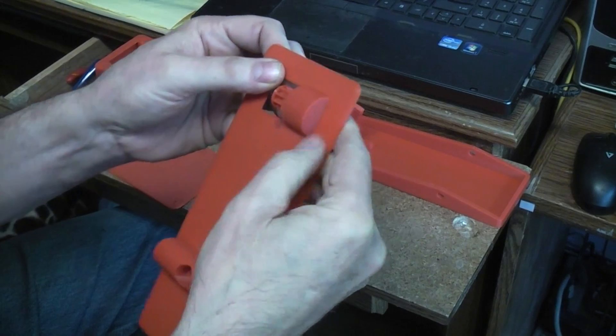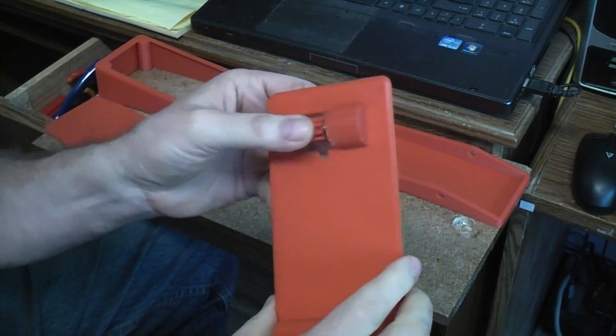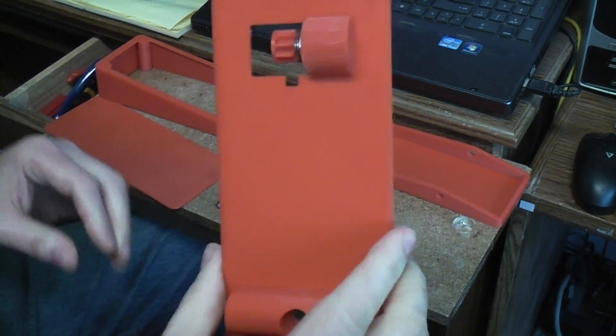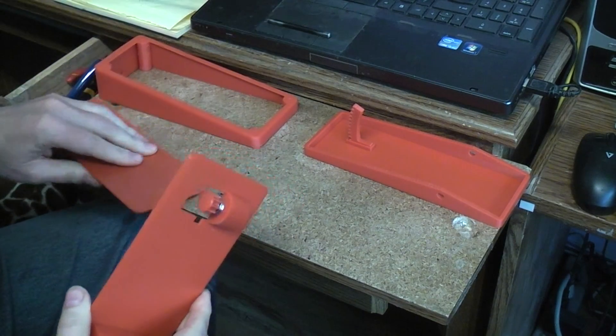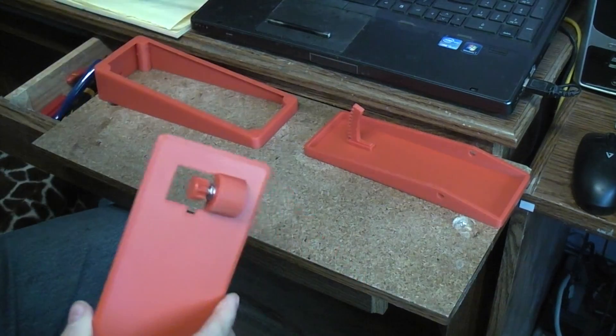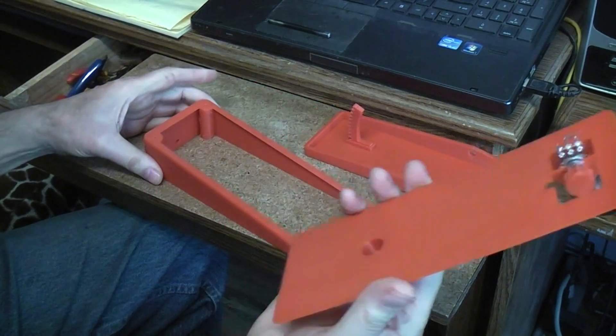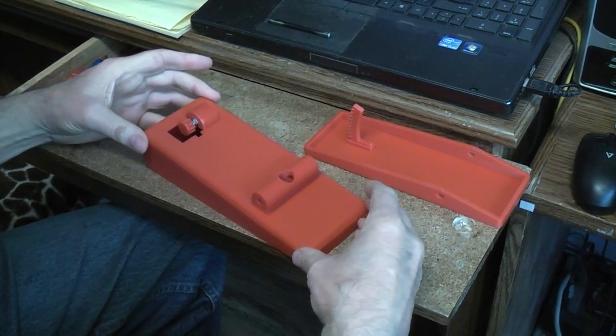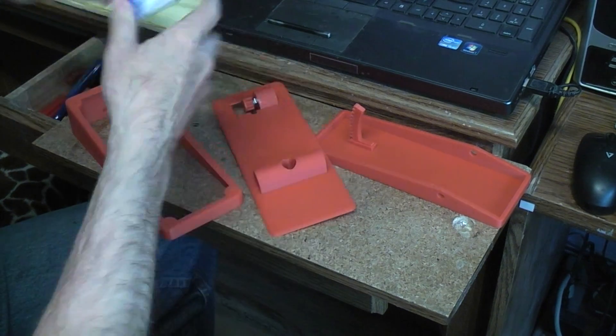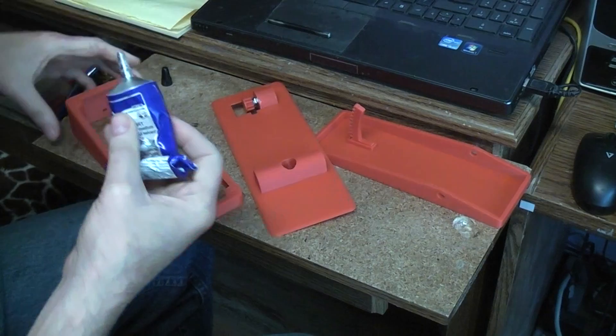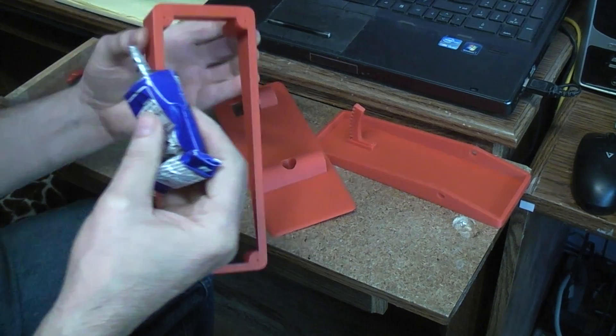Got a little bit of fuzzies and furries on there from the printing. So the next step, let's move that out of the way. Next step is going to be to take this and glue it to the top of this whole frame like that. Easiest way to do that is going to be to put the glue on the frame top because it's so wide.